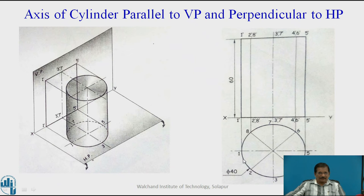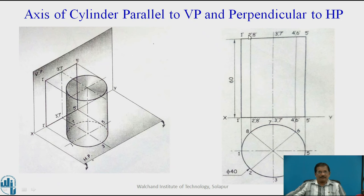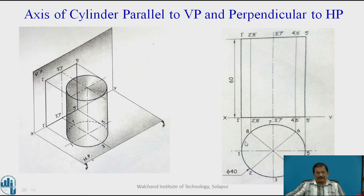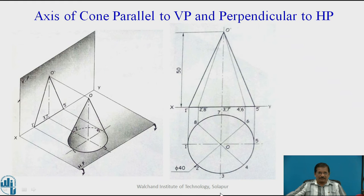Project each point. Point 1 is at the extreme right-hand side, so project it upwards to get line 1'-1', equal to the length of the cylinder axis, which is 60 mm. Similarly, project 2 to get 2'-8'. The centre line overlaps with 3 and 7. You will get lines 2-3 and 2-5 of length 60 mm. Join those points at the bottom as well as the top and you will get a rectangular surface, which is the front view of the cylinder resting on HP. In the case of a cylinder as well as a cone, you need to divide the circle into equal parts to get the correct image of the solid.